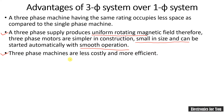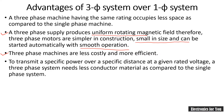Three-phase machines are less costly and more efficient because less copper is required, the size is small, and efficiency is good. That is why we can say that three-phase machines are less costly and more efficient.